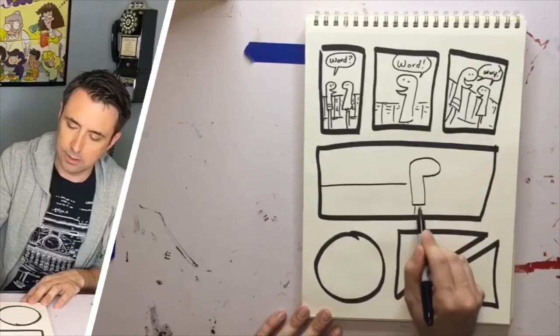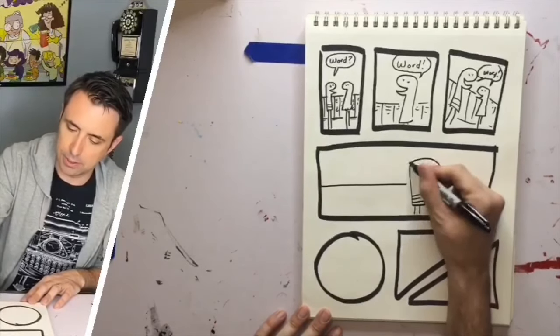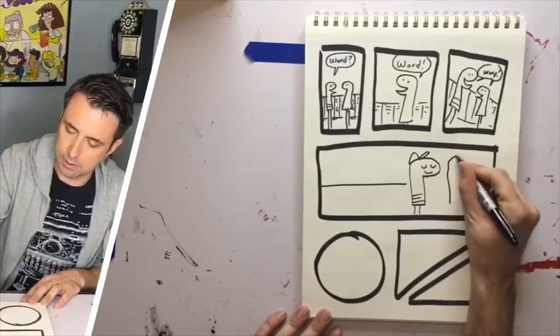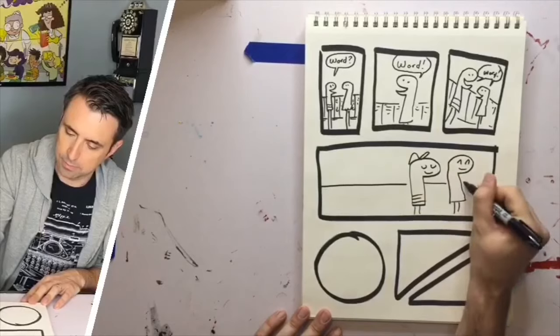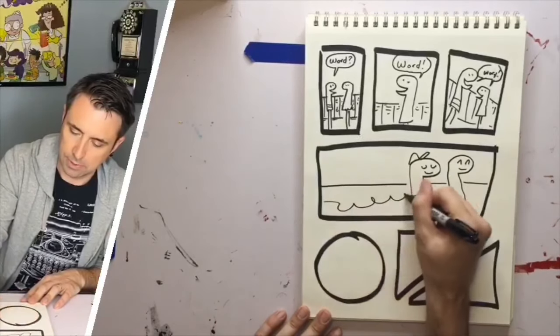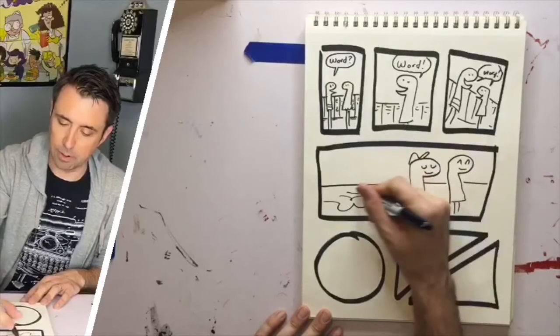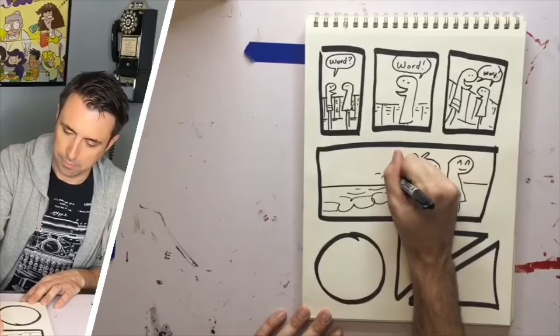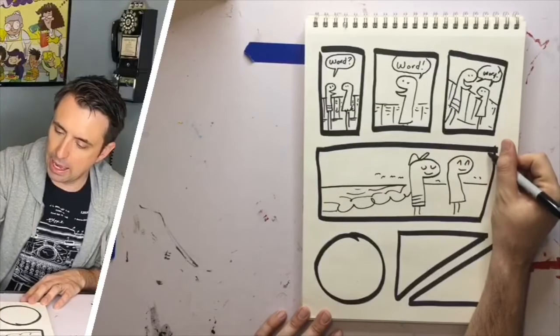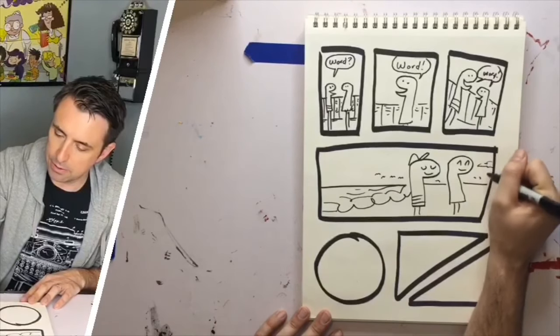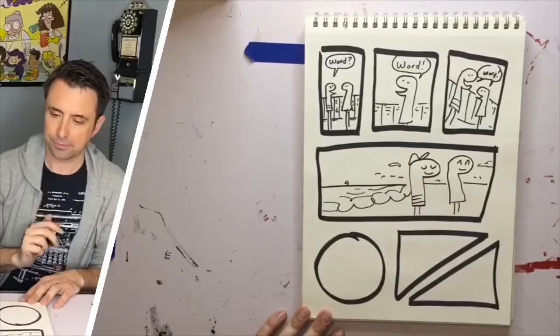Now in this panel, my characters are at the beach. And if they're at the beach, we need to put in some details of what we see at the beach. So we're seeing ocean, some seagulls there, and maybe some clouds, maybe a boat.